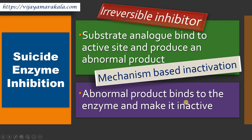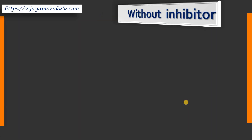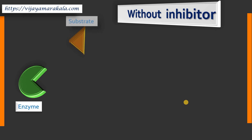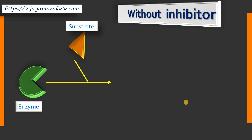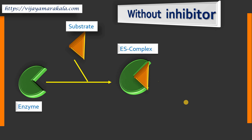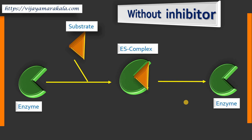Let me explain this concept. First we will see the normal enzymatic reaction. When an enzyme combines with its natural substrate, it produces an enzyme-substrate complex, and later on gives back the enzyme unchanged along with the product. This is the usual mechanism of an enzyme-catalyzed reaction.